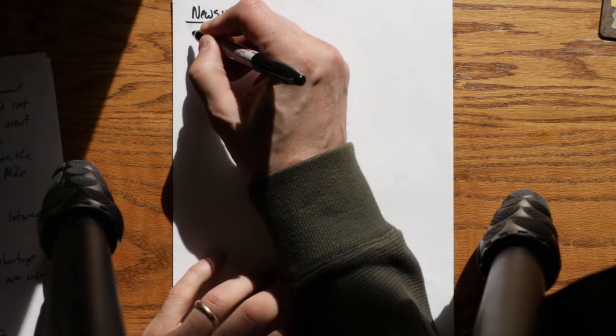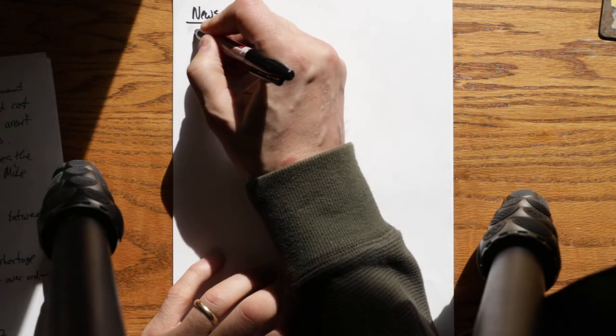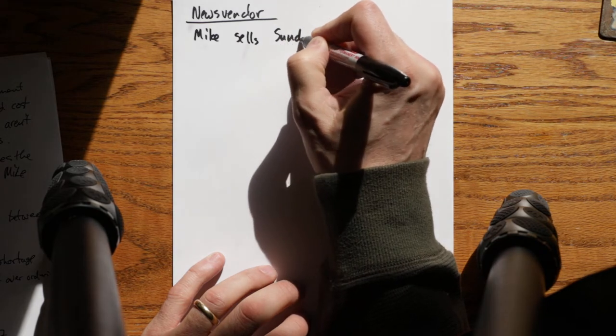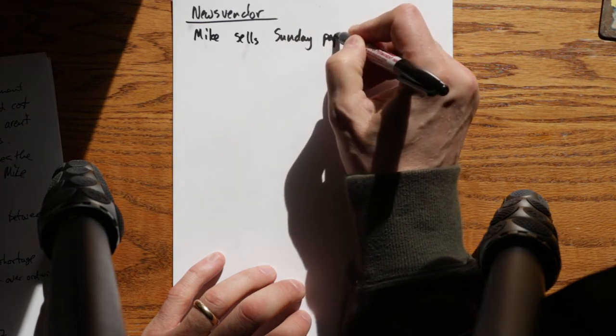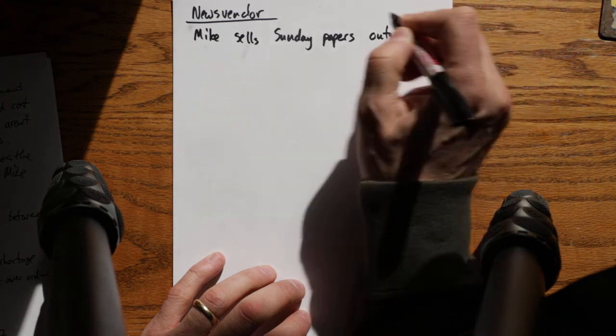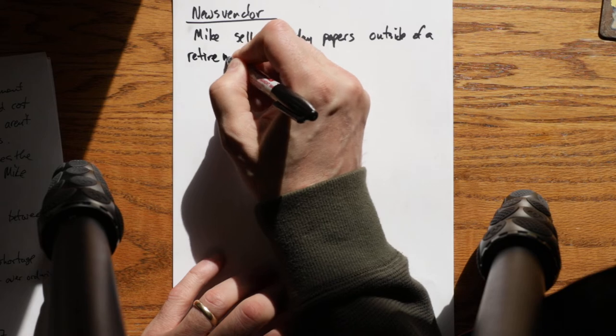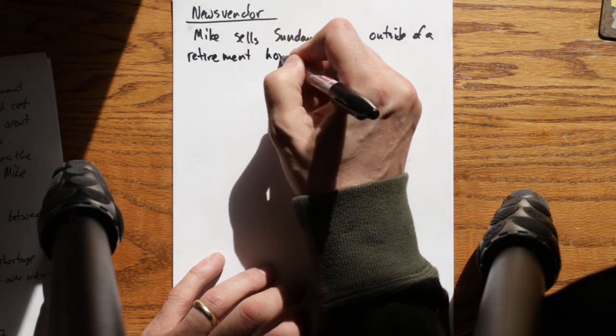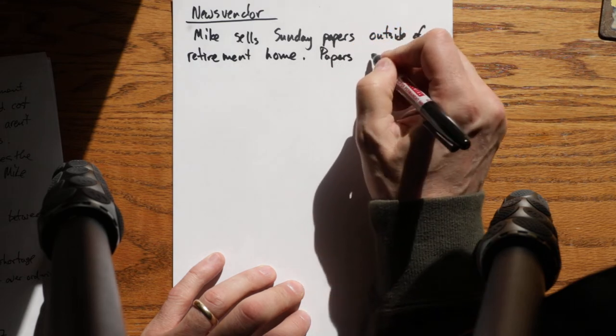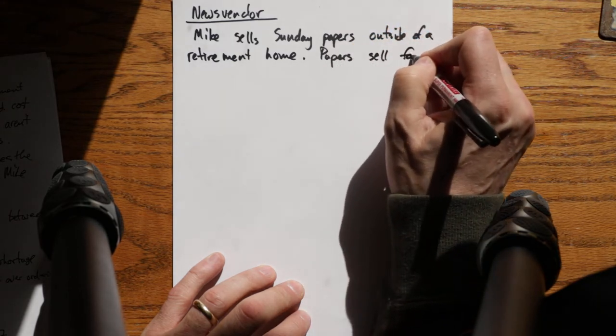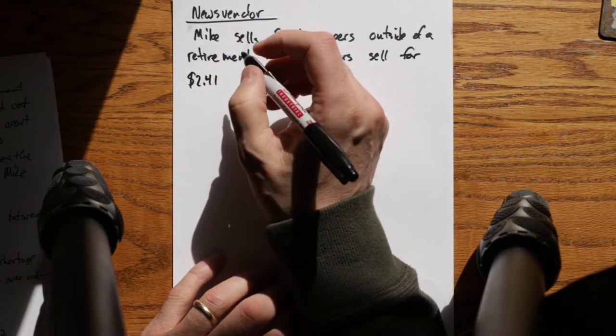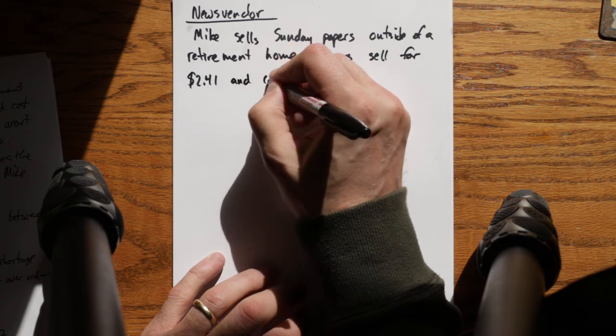This one is: Mike sells Sunday papers outside of a retirement home. Papers sell for $2.41, an odd number but it's my example, and cost $0.64.